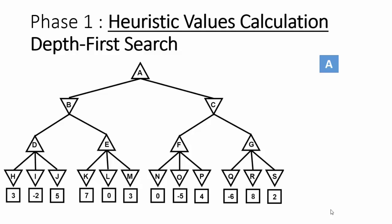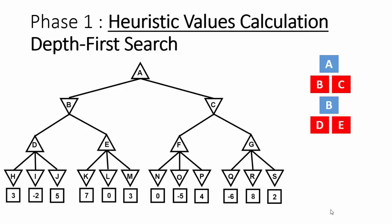The first node to explore is the root node A. Node A's heuristic value is unavailable, so we calculate it based on its children B and C. Because heuristic values for B and C are also not available, we start with node B. Node B's heuristic value will be calculated based on its children D and E. Since heuristic values for D and E are not available, we calculate those first, then calculate the heuristic value for node B.